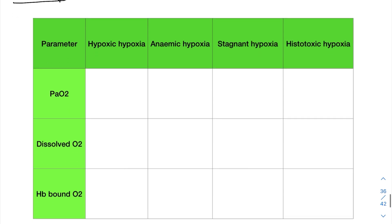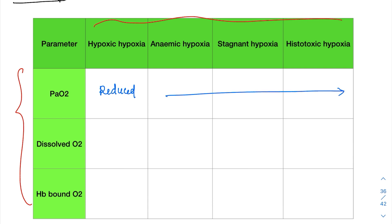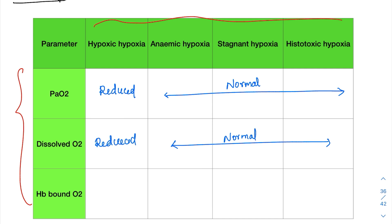Let's summarize in table form. PaO2 is reduced only in hypoxic hypoxia; in all other types it is normal. Dissolved oxygen is reduced only in hypoxic hypoxia; it is normal in anemic, stagnant, and histotoxic hypoxia. Hemoglobin-bound oxygen is reduced in both hypoxic and anemic hypoxia; it is normal in stagnant and histotoxic hypoxia.